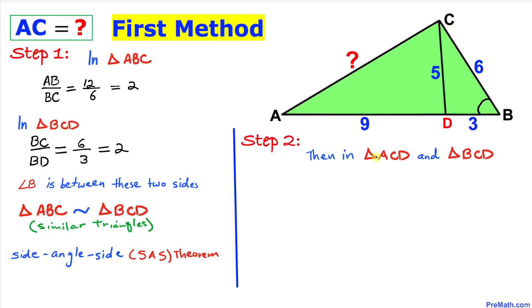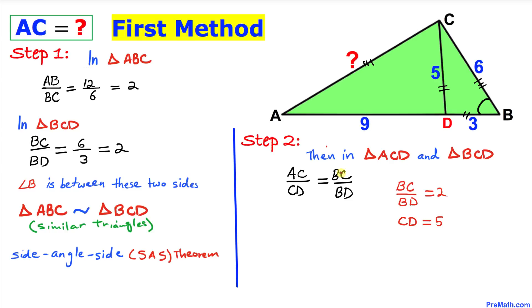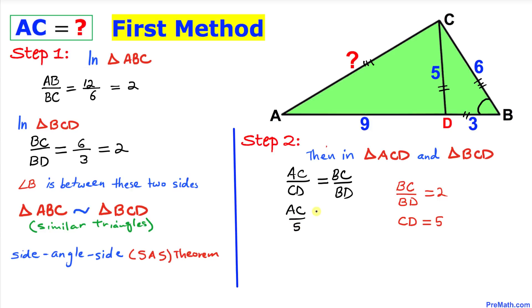In the next step, let's focus on triangles ACD and BCD and write down the proportions. AC over CD is going to be equal to BC over BD. We know that BC over BD is equal to 2, and side length CD is 5. So we can write AC over 5 equals 2.